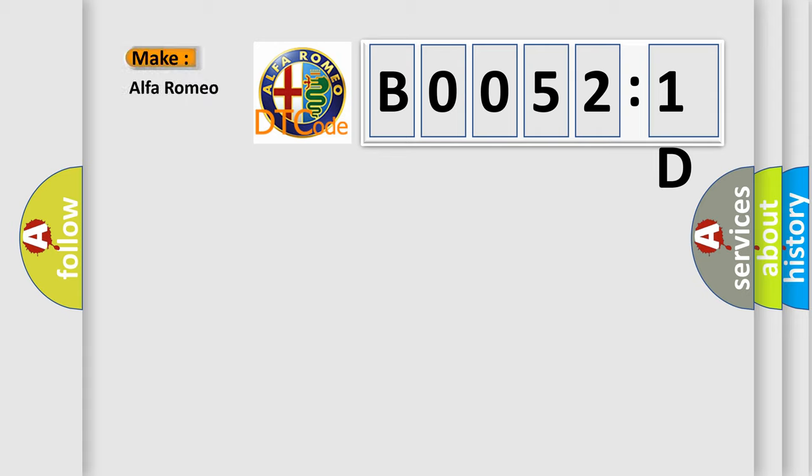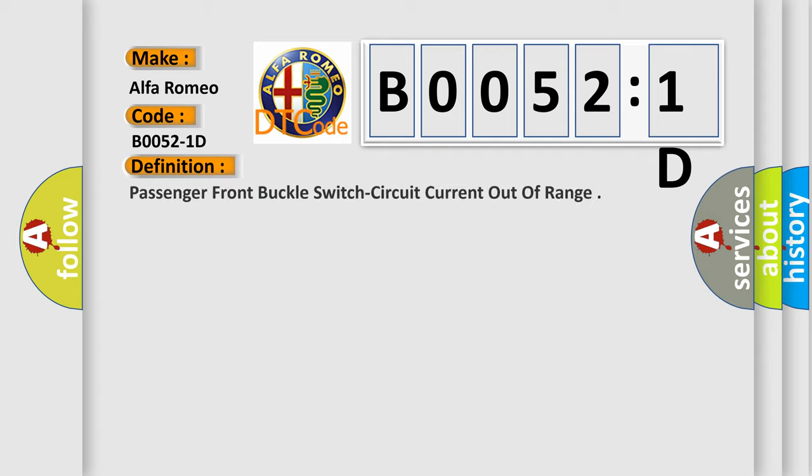So, what does the diagnostic trouble code B00521D interpret specifically for Alfa Romeo car manufacturers? The basic definition is passenger front buckle switch circuit current out of range.